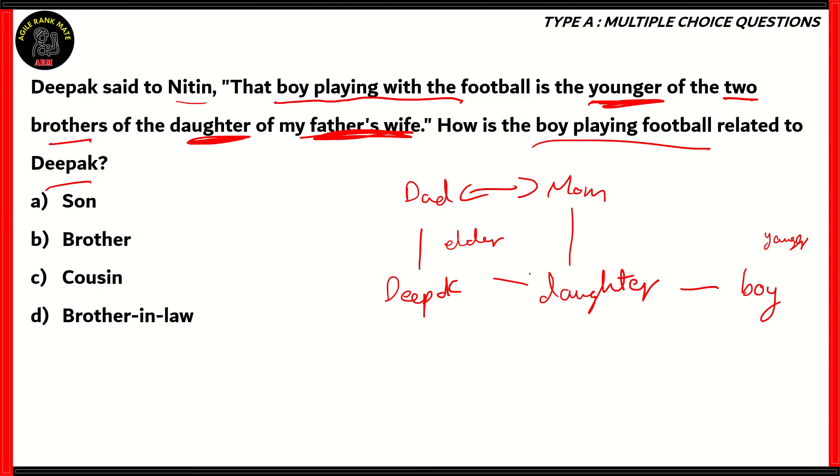So therefore, Deepak's sister, who's his mom's daughter, would have two brothers. One of them would be that boy playing with the ball, and the other would be Deepak himself. So it turns out Deepak is related to the boy, because both of them are brothers. So option B, brother, is the right answer.